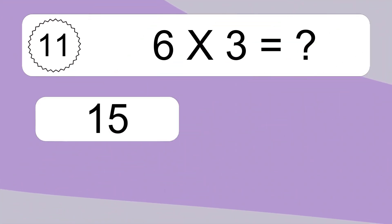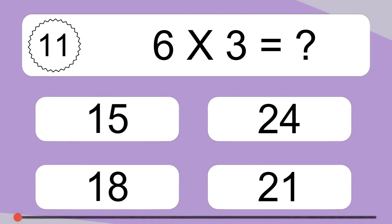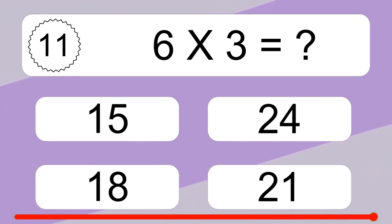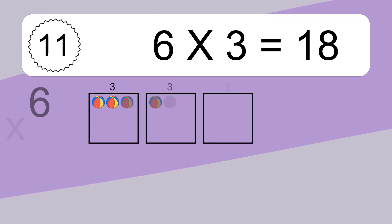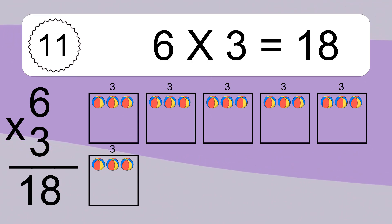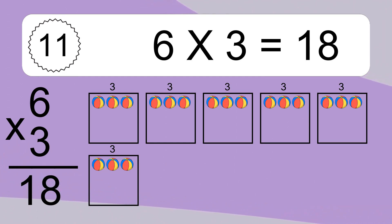6 times 3 equals what? 6 times 3 equals 18. We have 6 boxes, and each box has 3 colorful balls inside. If you count all the balls in all the boxes together, you will have 6 times 3 balls. This equals 18 balls.